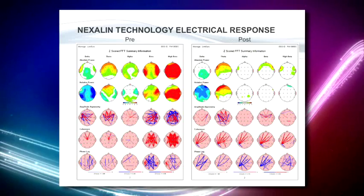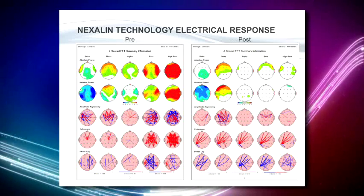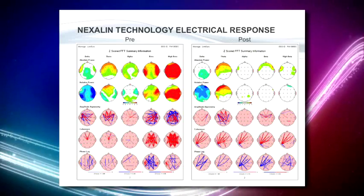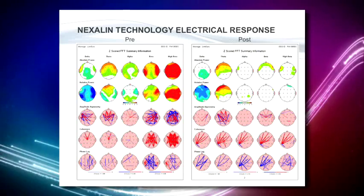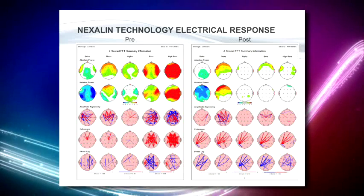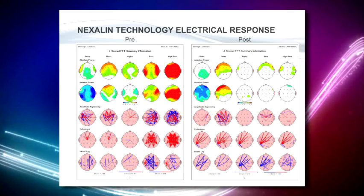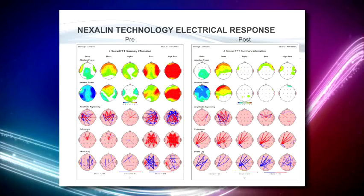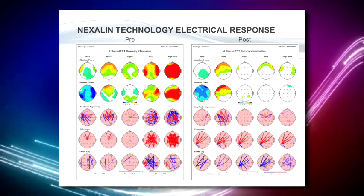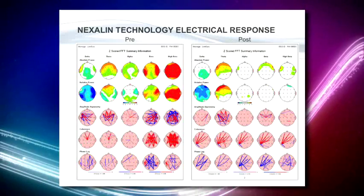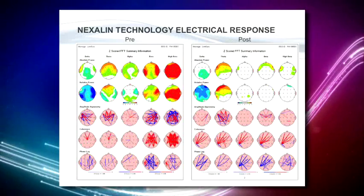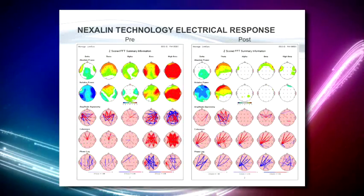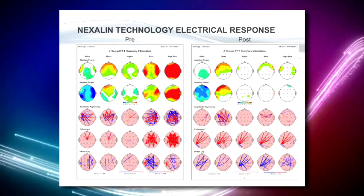The brain is always communicating with itself — always making decisions billions of times every second. These bottom three rows demonstrate that every time you see a line, that means there's a problem. So let's move to the right to the post map. As I said earlier, where there's color, there's a problem; when it's white, it's normal.